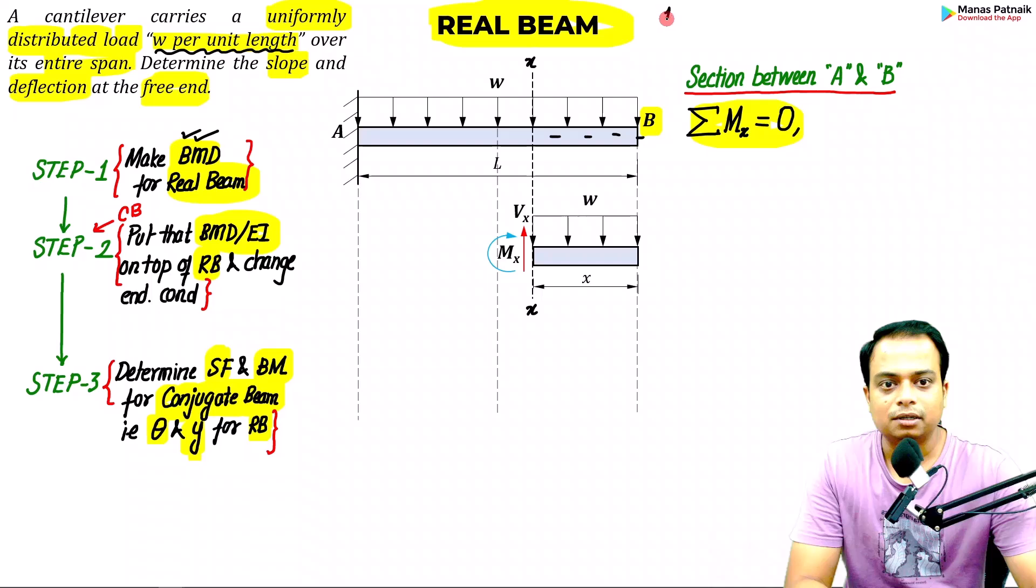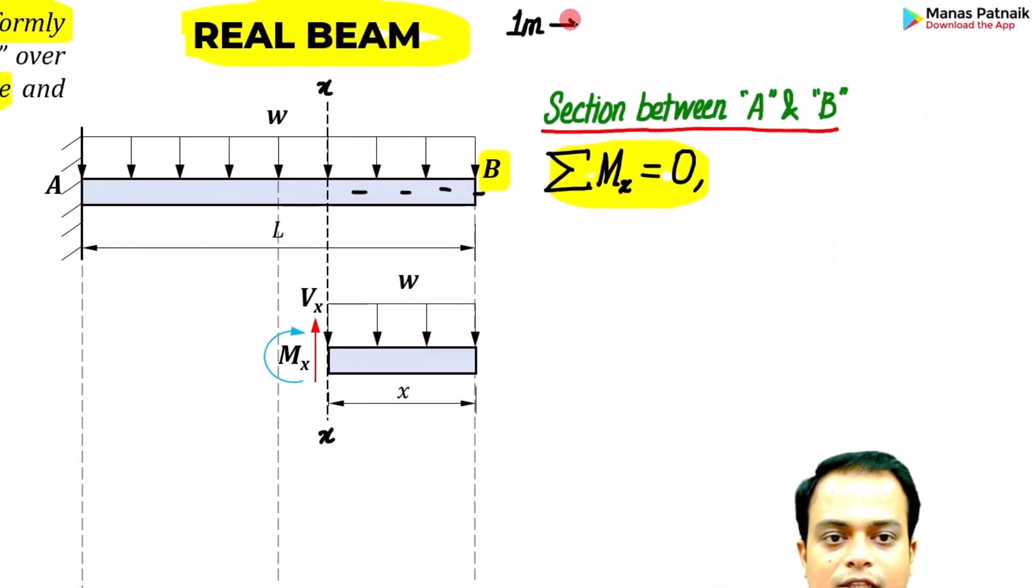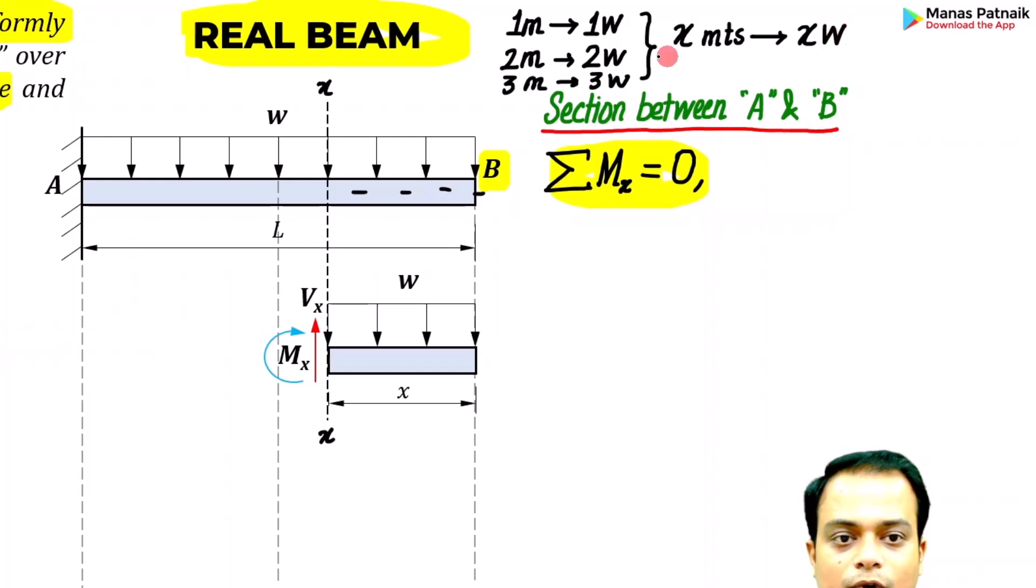Along this X-X section, the bending moment that we've assumed is Mx clockwise. Now, w per unit length means in a distance or length of one meter, the load is going to be w. For two meters it's two w, similarly for three meters it's three w. For x meters, the load acting would be equal to x times w, or wx. That load would be acting downwards right at the center of this small shell, wx.